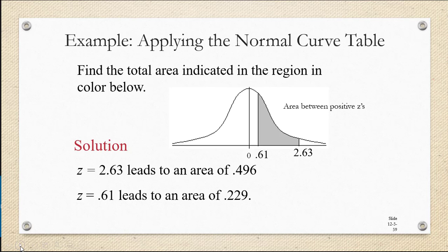But what are we going to do with those two values? Remember, these values are the area between the z-score of 0 and the z-score that we looked up. So for example, when we looked up z equals 0.61 and got 0.229, that was this little sliver of an area here between 0 and 0.61.